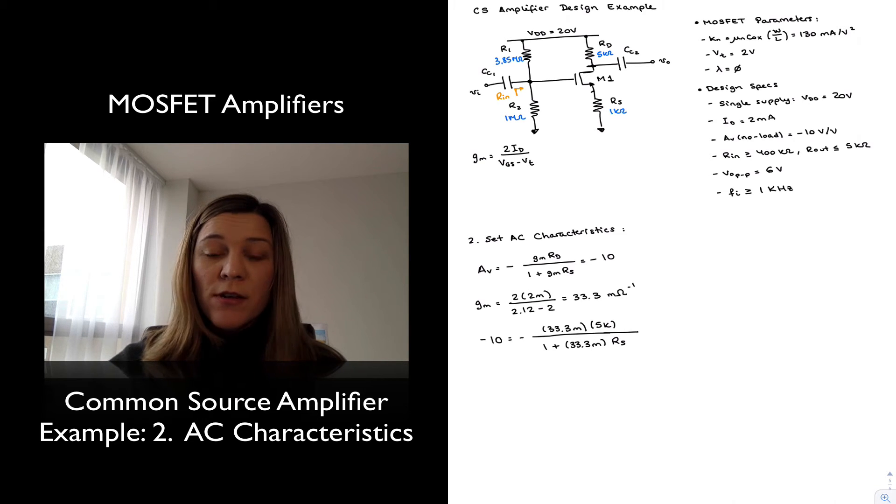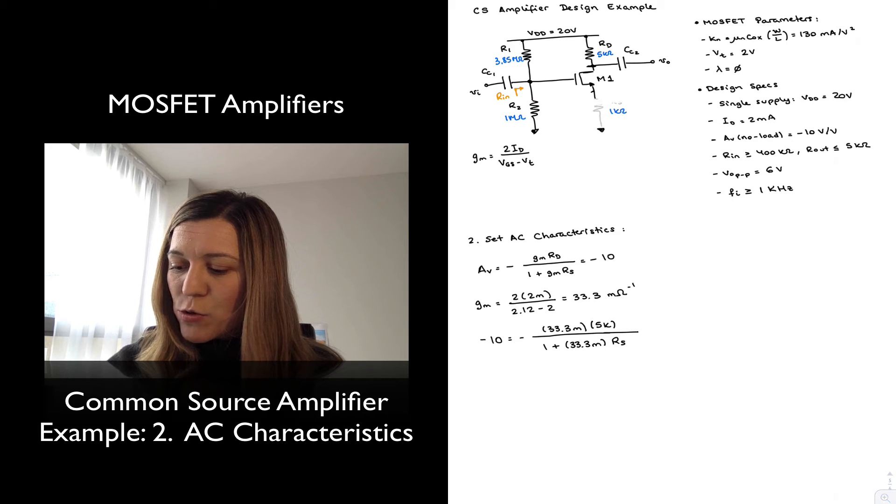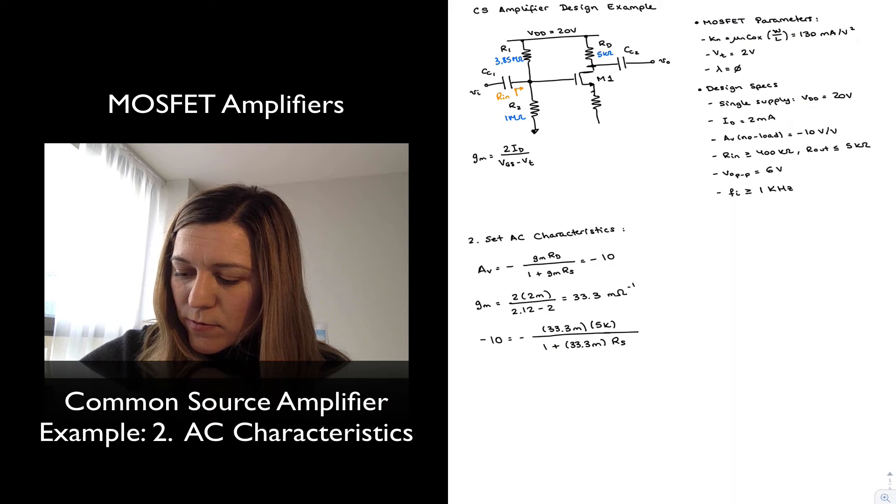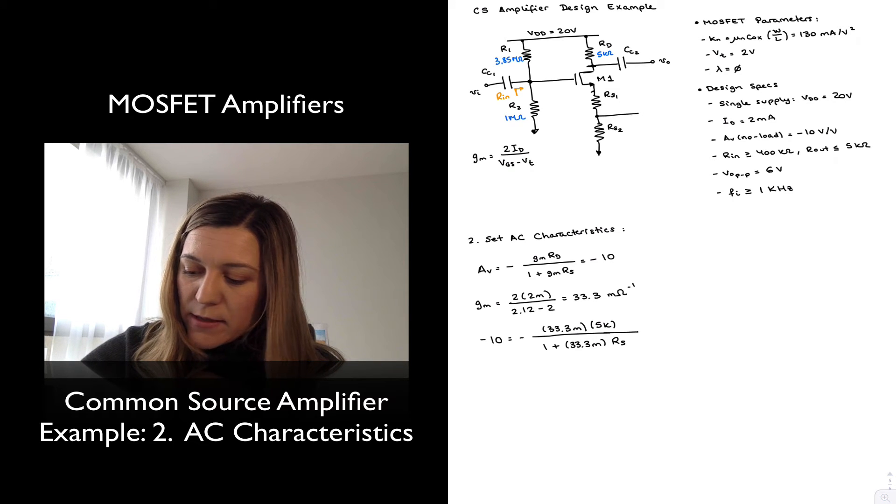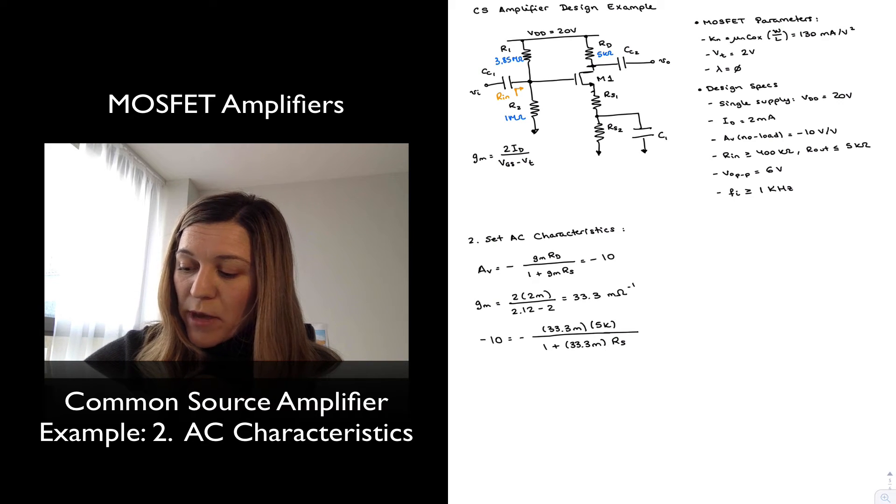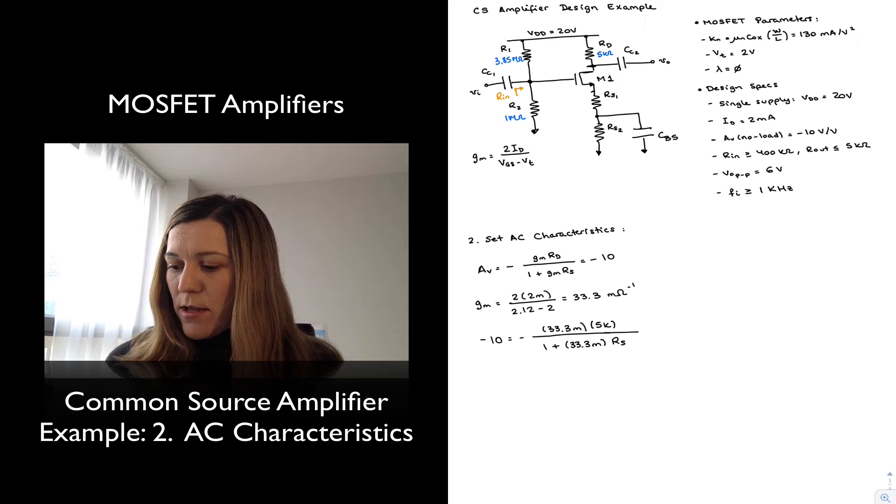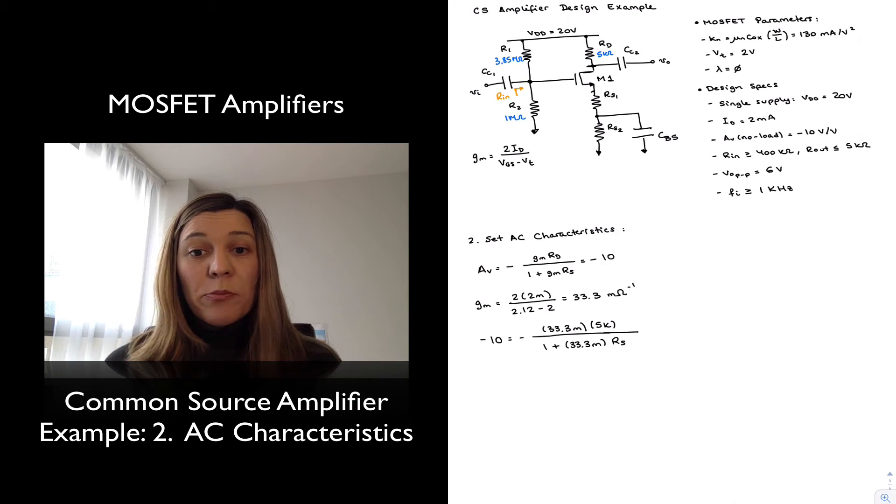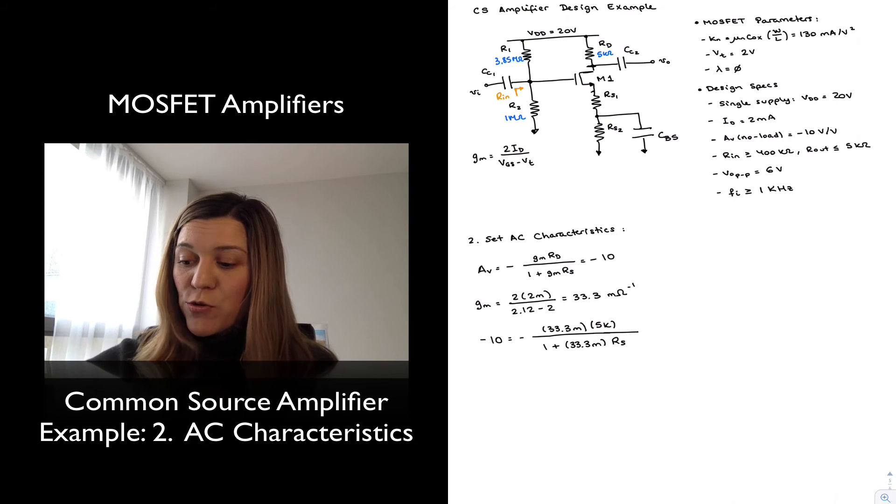And so I'm going to use the same trick that I use with my BJT common emitter amplifier, where I'm essentially going to split my source resistor into two series resistances, RS1 and RS2. And I'm going to bypass or partially bypass the source resistance, just the RS2 part of it, with a bypass capacitor. And the effect that this will have is, for my DC biasing purposes, CBS will be acting as an open circuit, and so my overall source resistance will be the sum of RS1 and RS2, and I want the sum of these resistances to be equal to 1 kOhm.